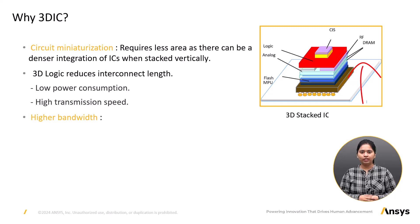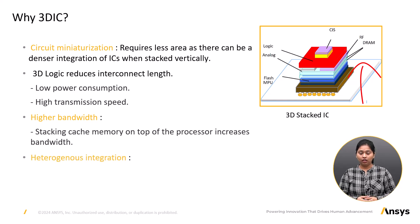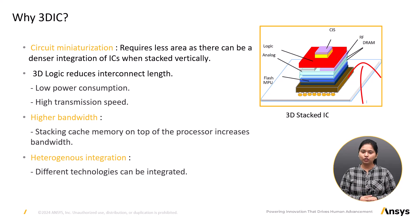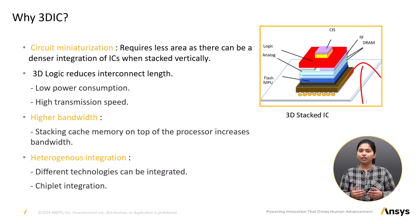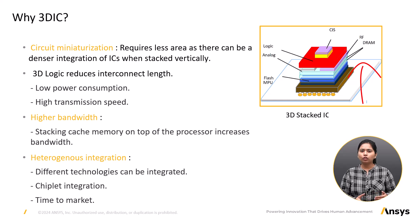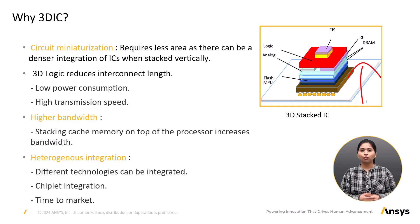Stacking memories vertically on top of the processor increases bandwidth. Heterogeneous integration allows the flexibility to integrate different process technologies and functionalities on a single chip with efficient use of space. 3D IC also allows chiplet integration — chiplets are SOCs split into smaller units, and different package technologies are used for their integration. Time to market can be better for 3D IC compared to the traditional 2D approach, and 3D IC allows integration of different process nodes and reusability, which can save cost as well.